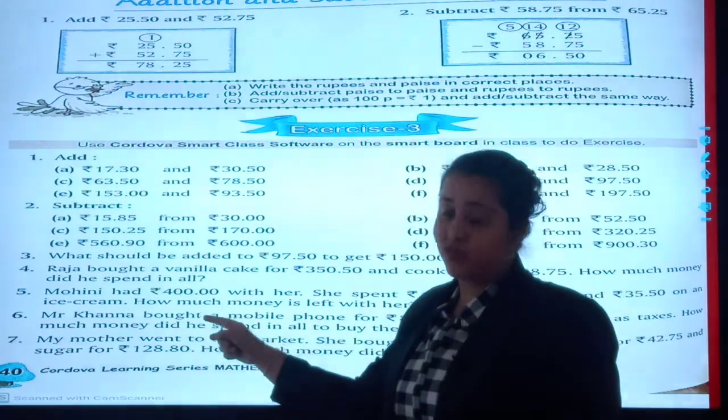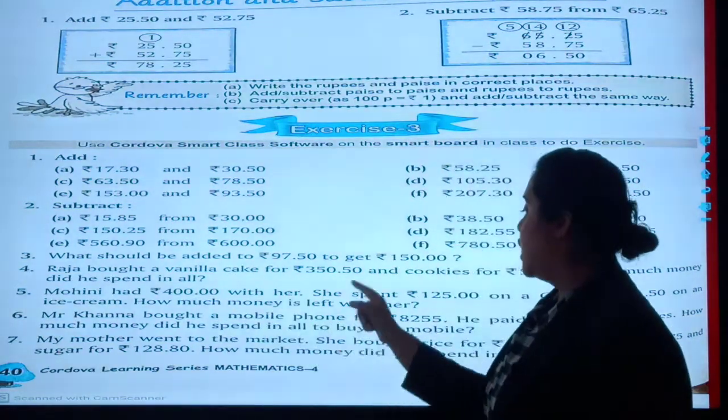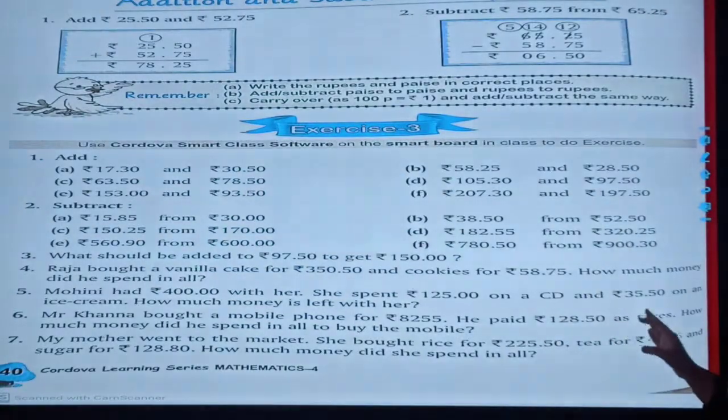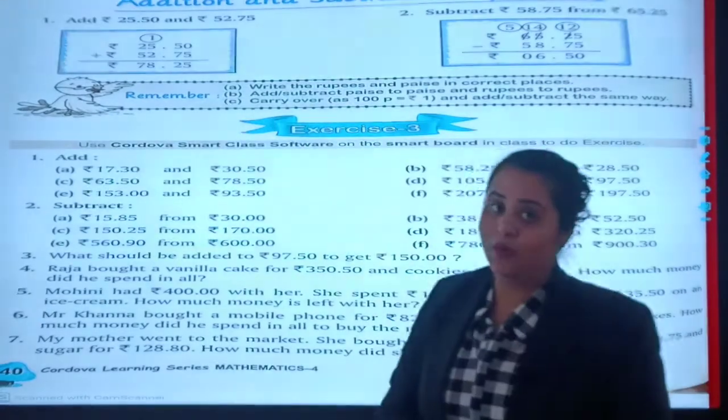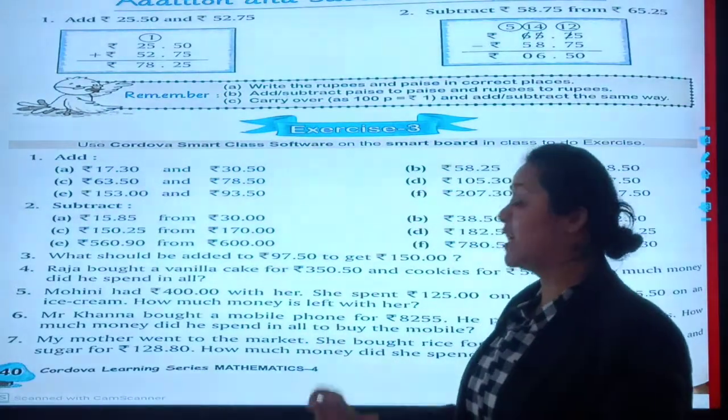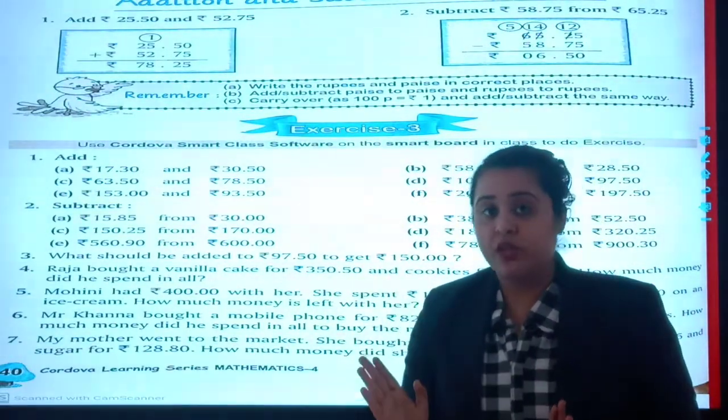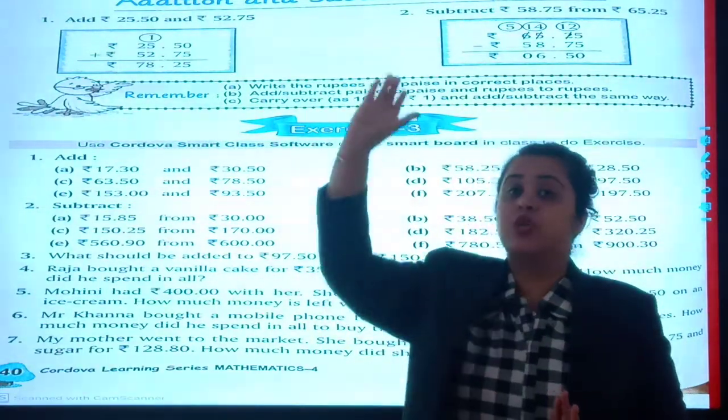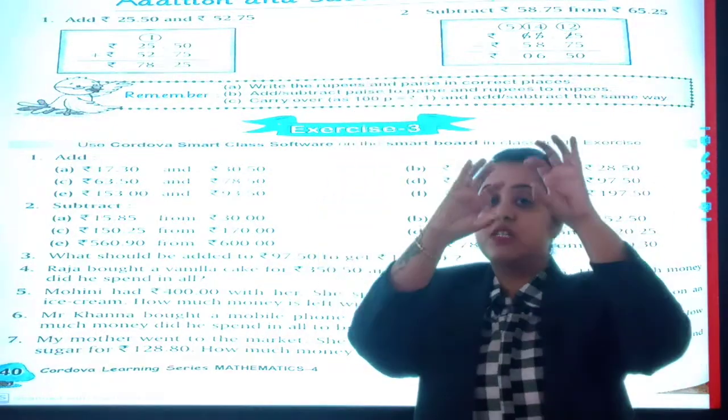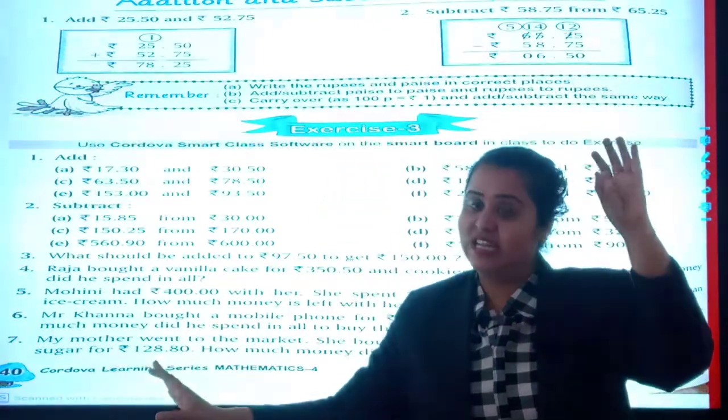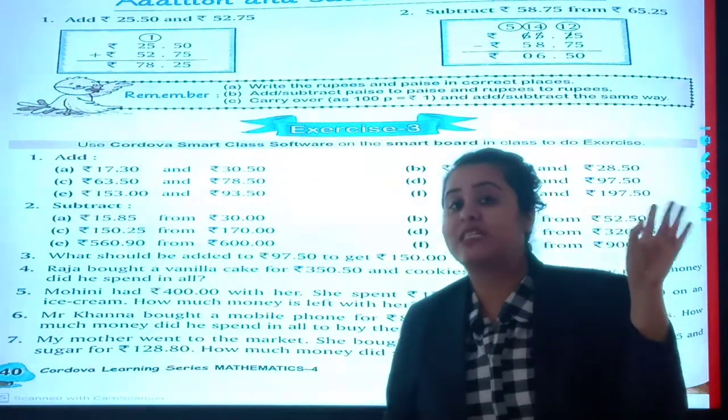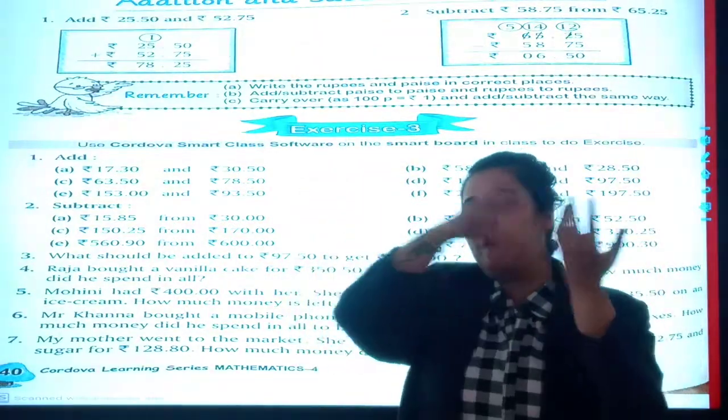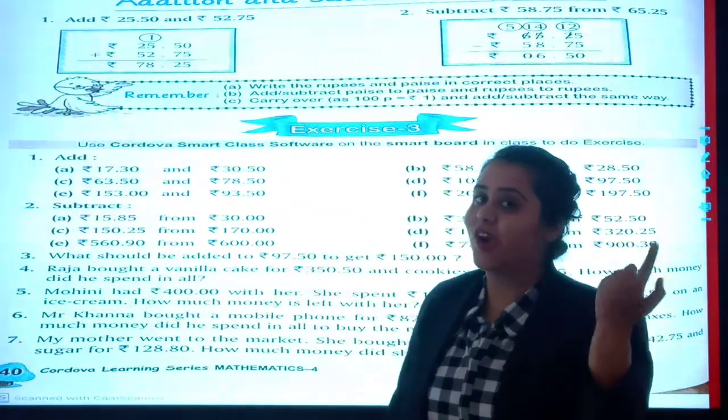Fifth, Moon has 400 rupees with her. She spends rupees 125 on CD and rupees 35.50 on ice cream. How much money is left? Whenever in the question is written 'left', you are supposed to deduct it. Total she had 400 rupees. From that she bought CD for 125 and ice cream for 35 rupees 50 paise. So you will minus both amounts from 400. You will be getting your final answer of how much amount is left with Moon.